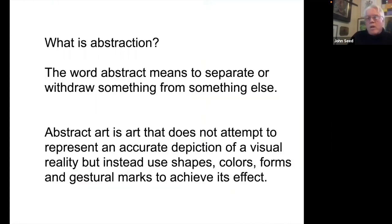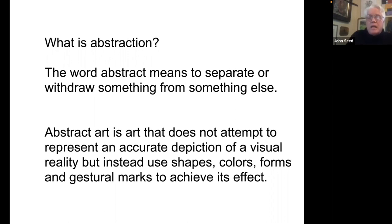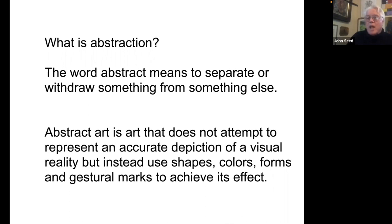To start with, the way a good teacher should, with a kind of definition: what is abstraction? A simple way to think of it — it means to separate or withdraw something. A very simple way to put it would be: take away what you recognize, and then you're going to have abstraction. So abstract art doesn't depend on being accurate in showing us a kind of reality, but can use formal elements — shape, color, or mark making — to achieve an abstract effect.